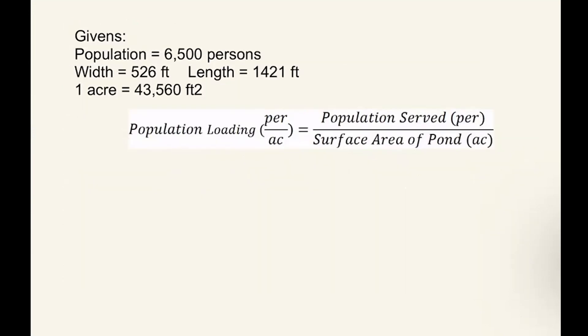The first thing we're going to do is identify our surface area. Surface area is equal to our length times our width. And these are given, so we have 526 feet times 1,421 feet. This is equal to 747,446 square feet.